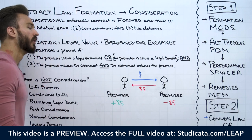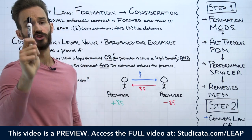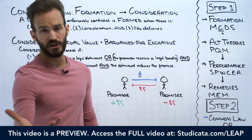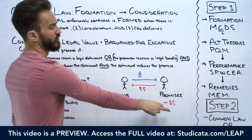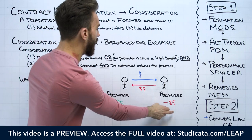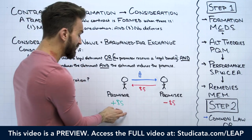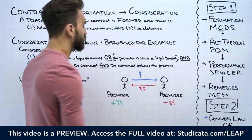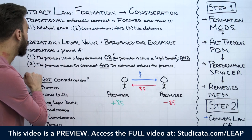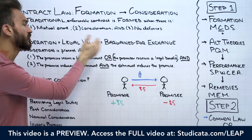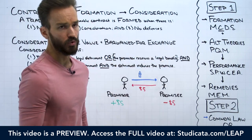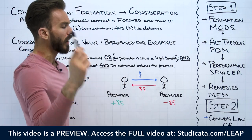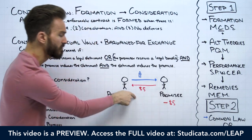Going back to the example: I offer to sell you this dry erase marker for $5, you say 'I accept.' Your legal detriment as the promisee is paying me $5 that you have no legal obligation to otherwise pay. So the promisee has incurred the legal detriment of $5, and my benefit as the promisor is that same $5. Moving on to the second element: do we have a bargained-for exchange? We know the promisee is incurring a legal detriment — the legal value element is satisfied.